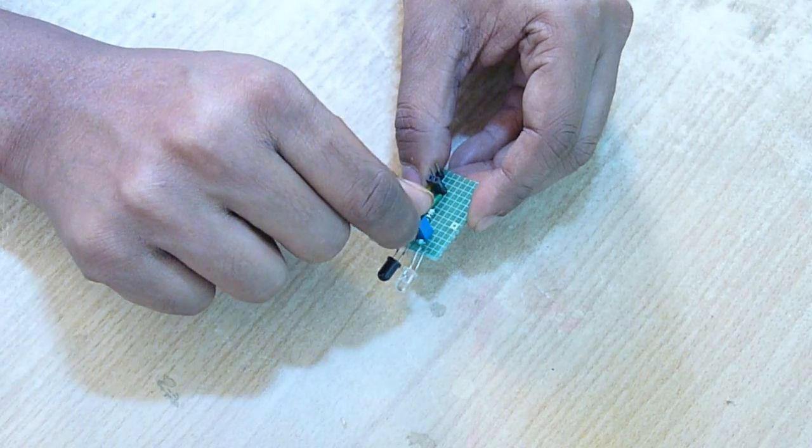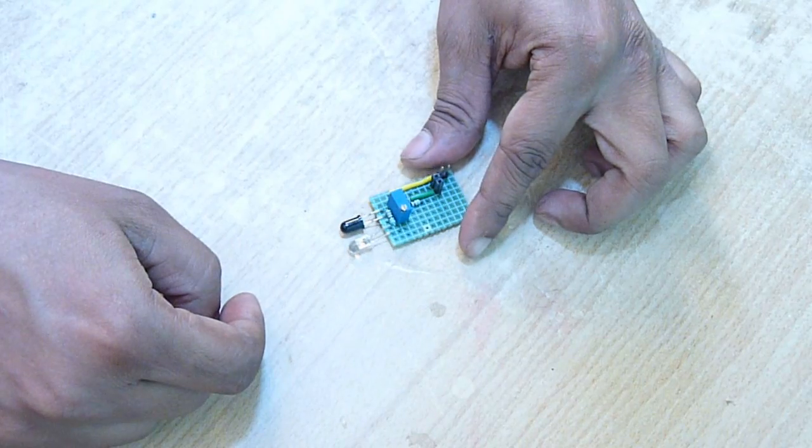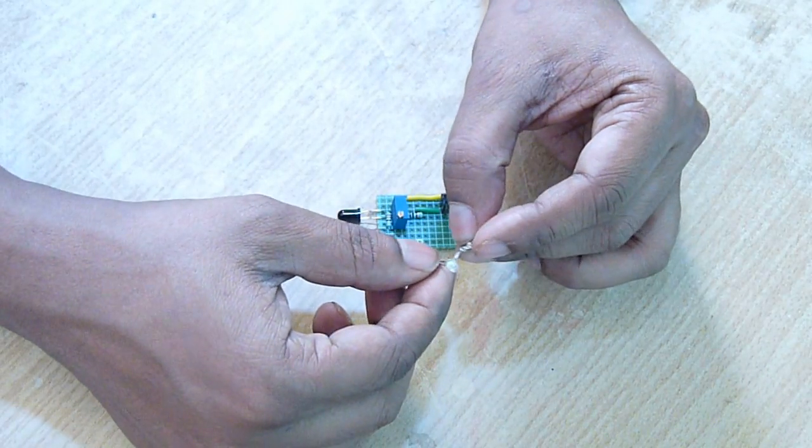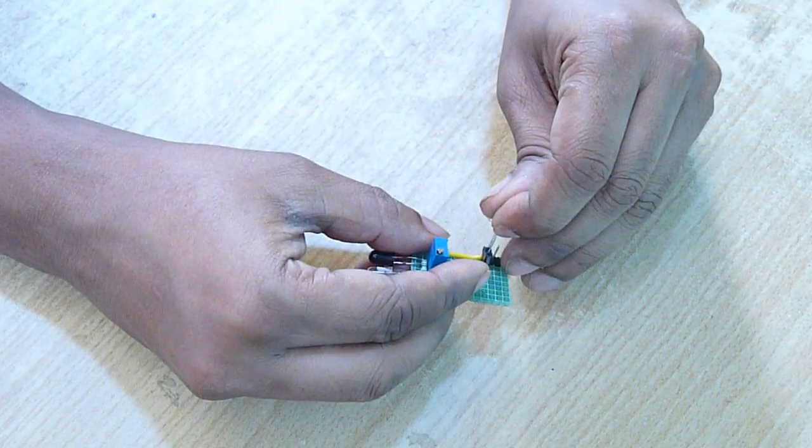This will switch on the MOSFET. Now by varying the potentiometer, you can increase the sensing range. As a load, I'm going to connect an LED in series with a 150 ohm resistor.